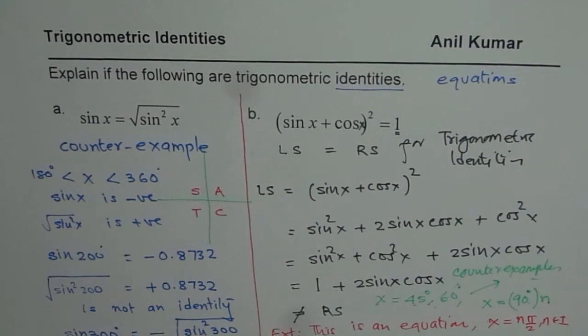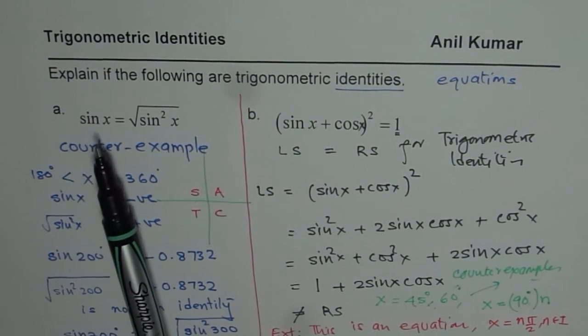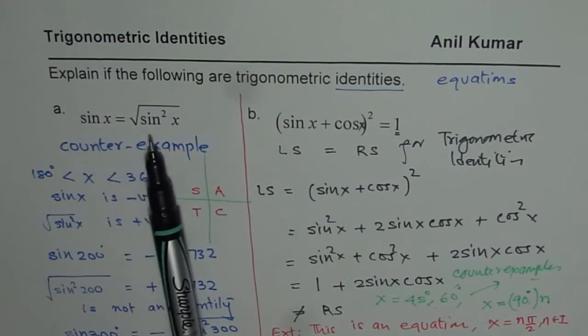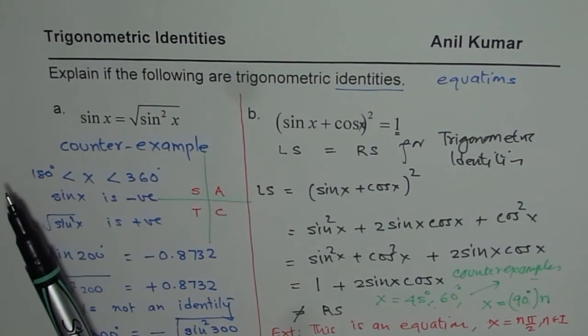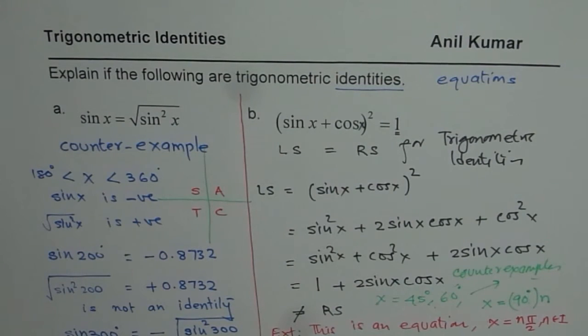As we move forward in solving or proving trigonometric identities, we basically will prove that left side equals right side for all the valid values of the independent variable x. And if it is not so, then it is not an identity, but just an equation. I hope that is clear. Thank you.